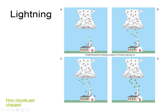Eventually that charge difference gets great enough that the negative charges start to work their way down toward the positive ground. That little ionized channel is called a stepped leader. In your diagram, label that a stepped leader. The charge of the stepped leader is negative, working its way down toward the positively charged ground.